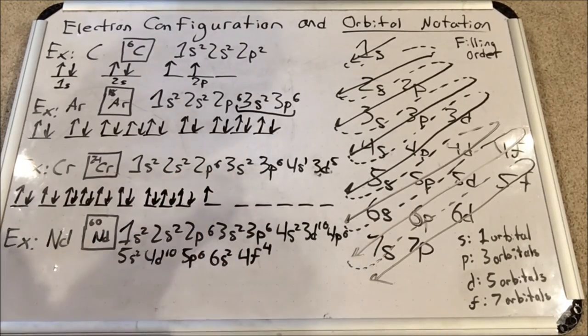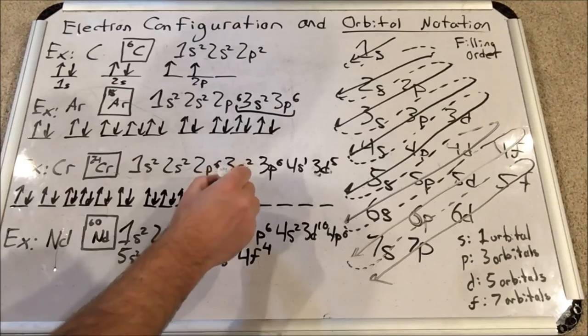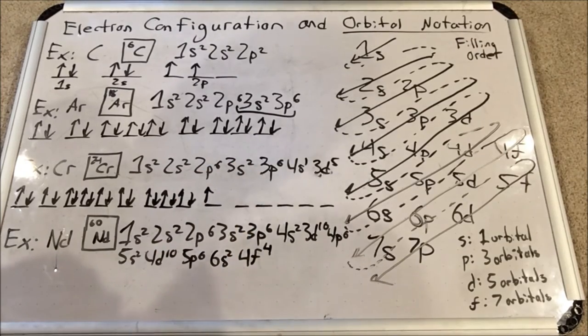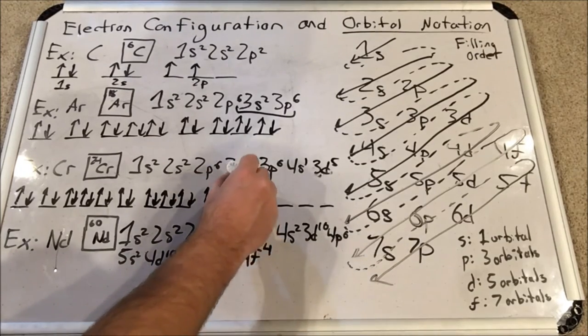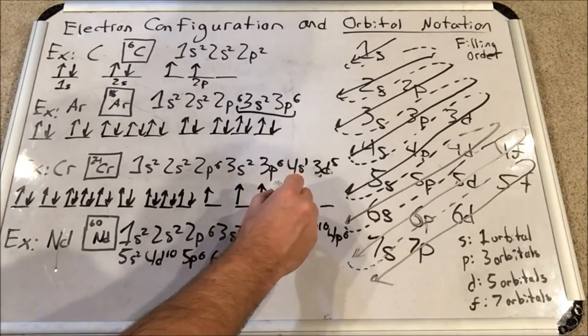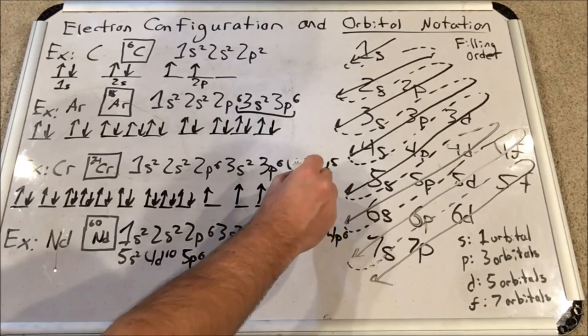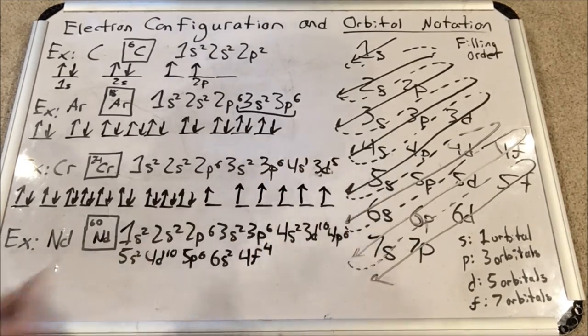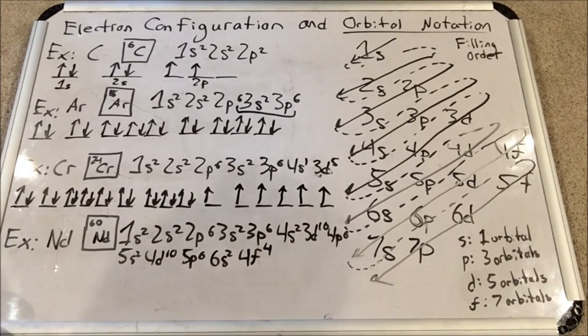Okay, for 4s1 I do not fill the second electron in there because it's been taken by d. 3d has five: one, two, three, four, five.